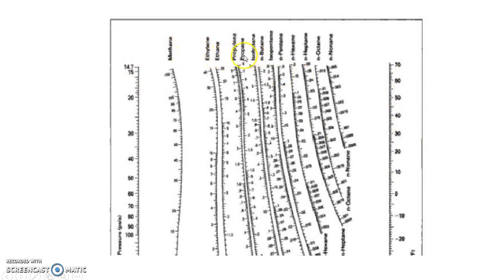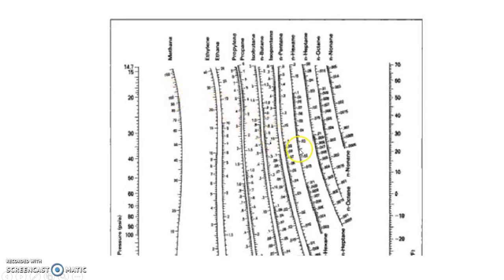Suppose my mixture contains methane, ethane, and propane, and I want to find the value of k at any given temperature and pressure. If my temperature is 10°F and my pressure is 1 atmosphere, I connect 14.7 to 10 on the chart, and wherever that line cuts methane, ethane, and propane, I note down those values — these become my K values: k1, k2, and k3.